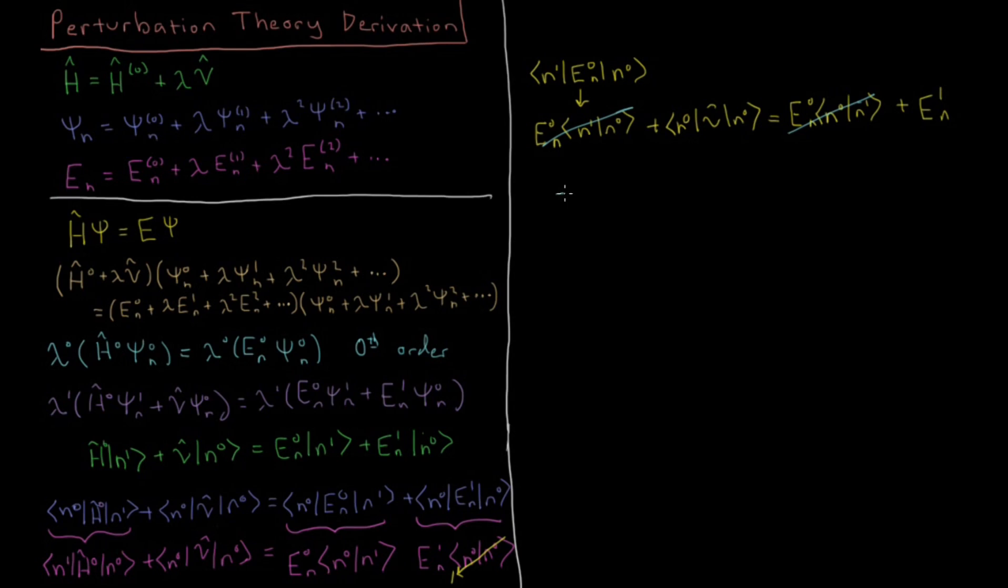So then what we're left with is our final expression for this first order energy. Let me write it in terms of this more formal notation here with the parentheses. So our E1 is just going to equal this integral, which if I write out fully, it's going to be the integral over all of the wave function space, whatever volume element we have d tau, psi 0 n star, V, psi 0 n.